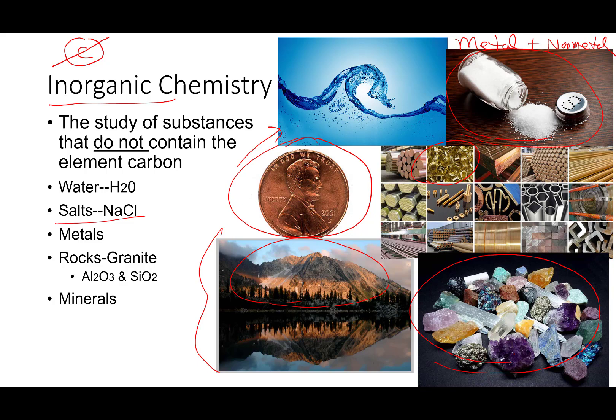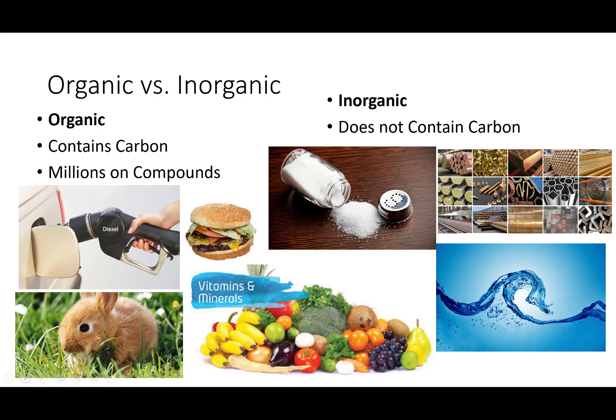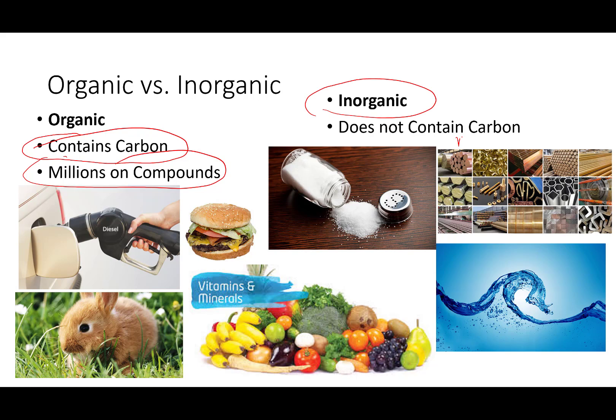So to summarize organic versus inorganic: organic is anything that contains carbon, and there are millions and millions of those compounds. Inorganic are compounds that do not contain carbon, and again there are millions of those. So it is just one way for chemists to classify these. In future videos we'll talk more about the bonding and how they chemically behave, because that's how we can organize and make sense out of things — these bond one way, these bond another.